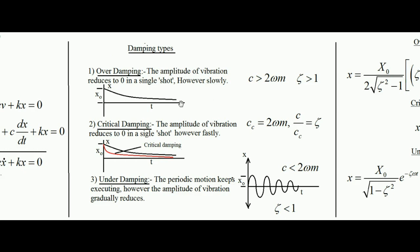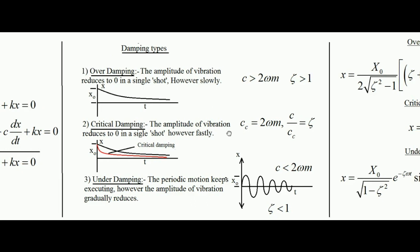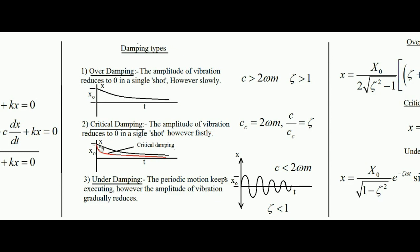In critical damping, if the particle or mass starts from amplitude, it also moves toward the mean position — shown by the red line — but in a faster fashion compared to over damping. Critical damping reaches the mean position most rapidly; however, it still takes infinite time to reach the mean position. Critical damping is also not a periodic motion, because once the particle reaches the mean position, no more vibration occurs.